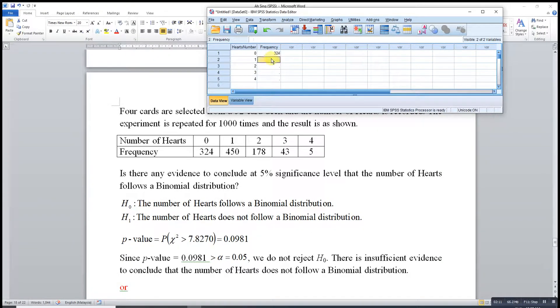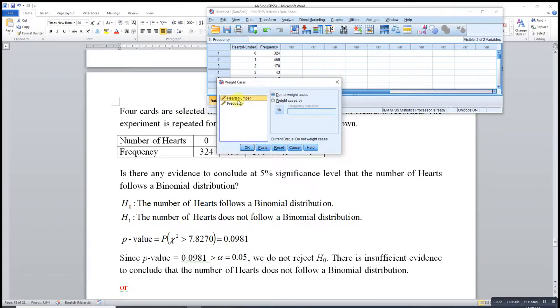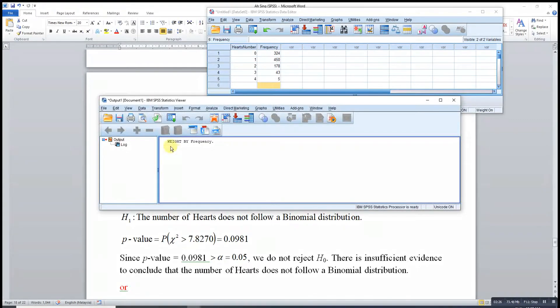So we enter 324, 450, 178, 43, and 5 for the frequencies. Then remember to go to Data, Weight Cases, Weight by the frequency, then OK. Already weighted.